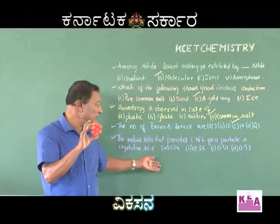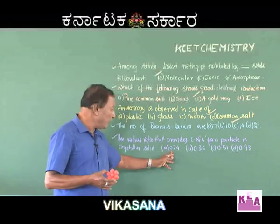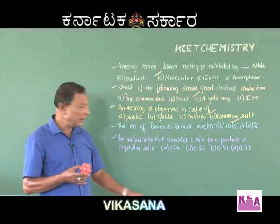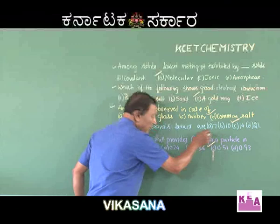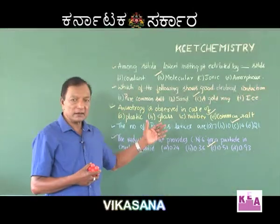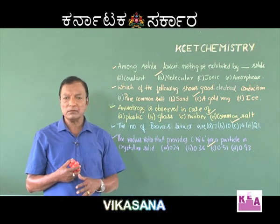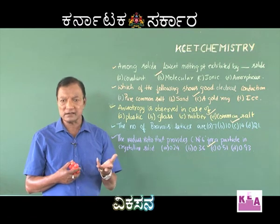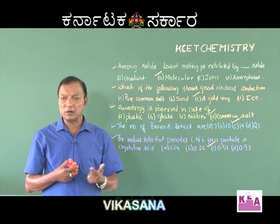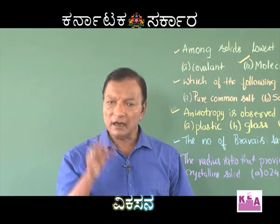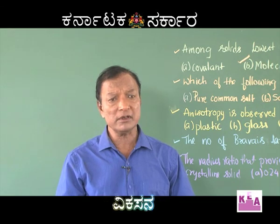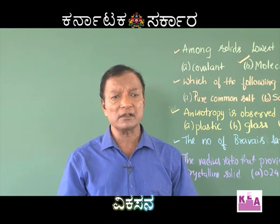Therefore, for a radius ratio of 0.24, 0.36, 0.51, or 0.93, we select coordination number 6, and the selection falls upon option C, that is 0.51. Please make note of the basic needs in the study of crystalline solids: their compact arrangement, melting points, physical properties like anisotropic nature, systematic arrangement, and the coordination number of each particle. We will explore more features of crystalline solids in further questions.